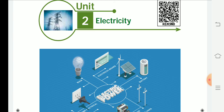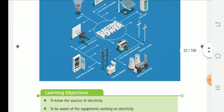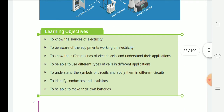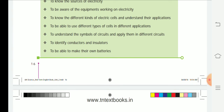The learning objectives for this lesson are: to know the sources of electricity, to be aware of equipment working on electricity, to know the different kinds of electric cells, to understand their applications, to apply different types of cells, to understand circuit symbols, to identify conductors and insulators, and to be able to make their own batteries.